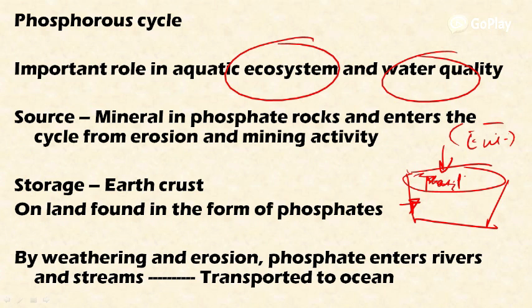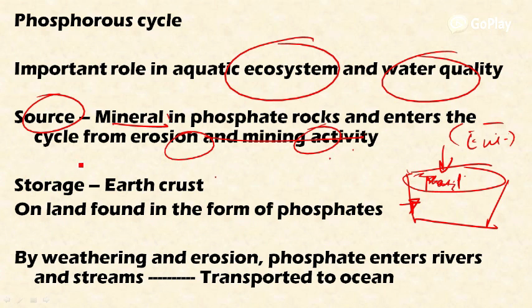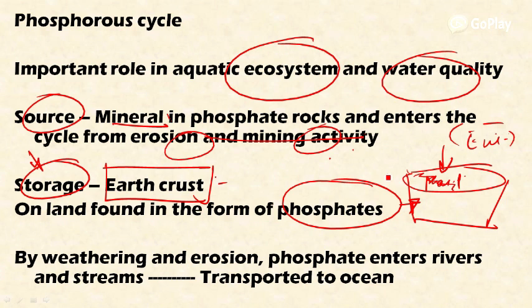A healthy balance of phosphorus in the ecosystem is very much essential for a balanced ecosystem. The source of phosphorus in the environment is through mineral deposits — phosphate rocks. Phosphorus enters the cycle through erosion and mining activity. The source of phosphorus is the earth's crust, not the atmosphere. On land, it is found in the form of phosphates, and these phosphate rocks undergo weathering.